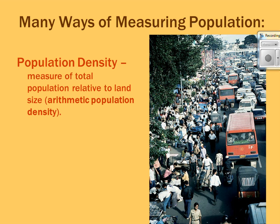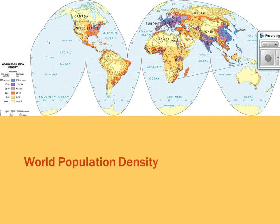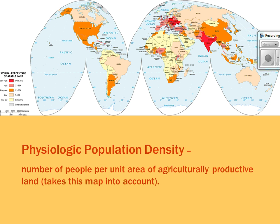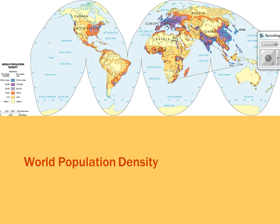There are certain ways of measuring population — we usually connect it to population density. We have two types: arithmetic, which is the total land divided by the total population, and physiologic, which is the number of people divided by the amount of arable land — land that can be grown on. We have a map showing the percentage of arable land and a population density map.